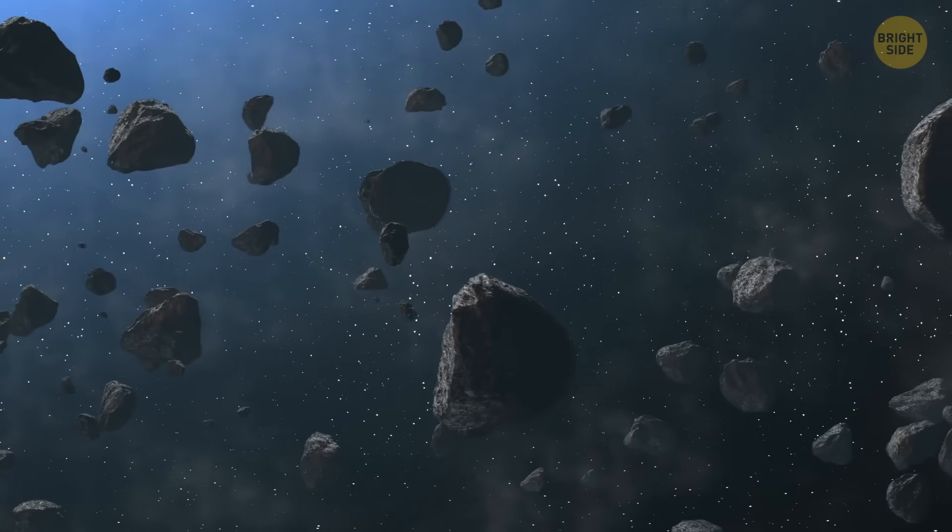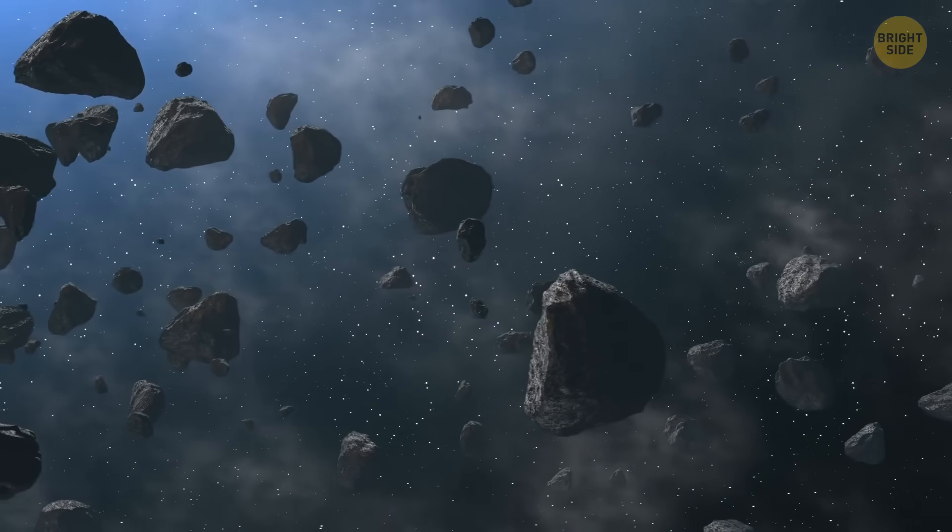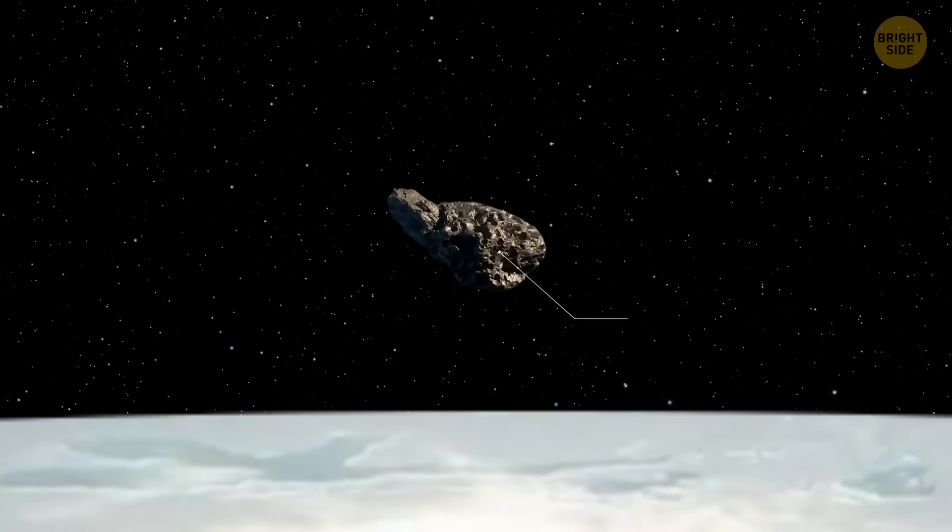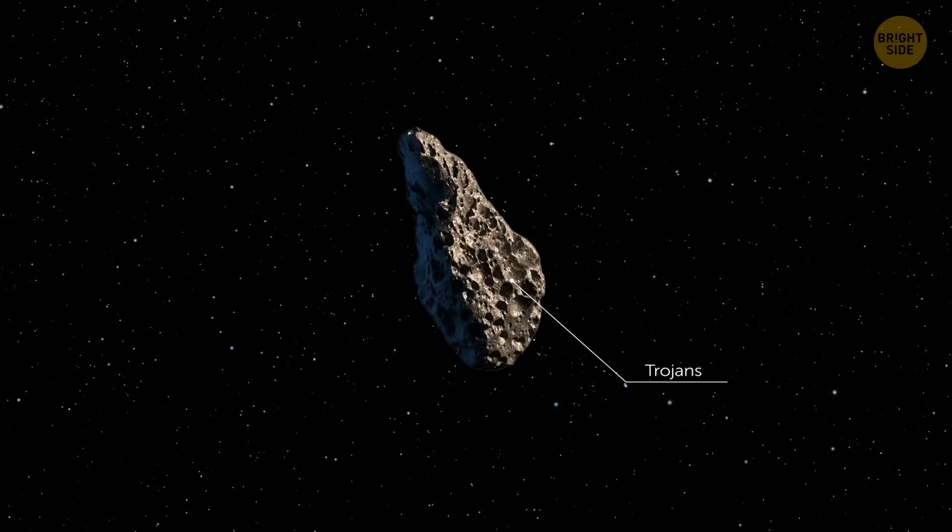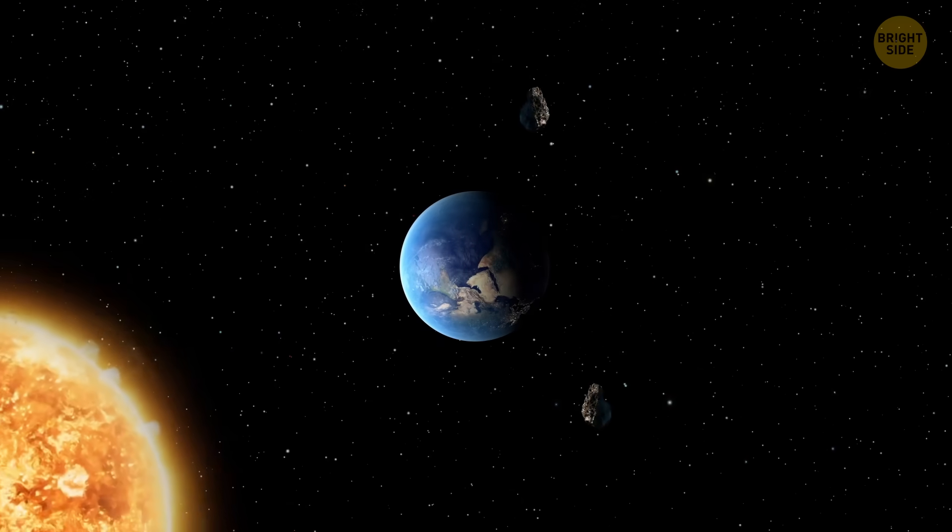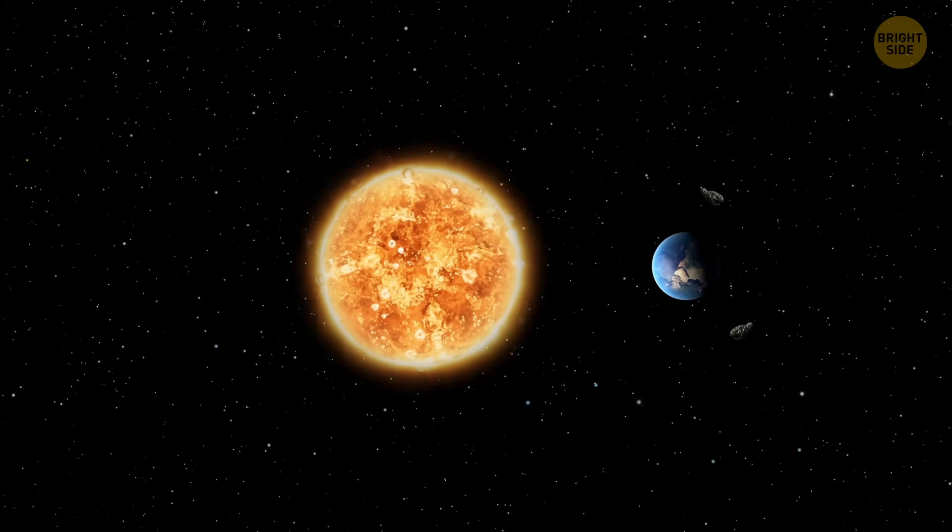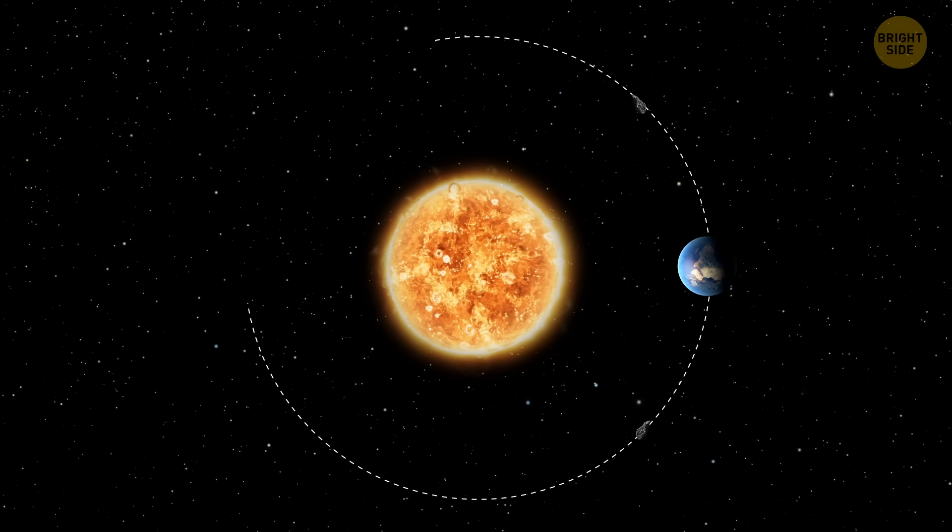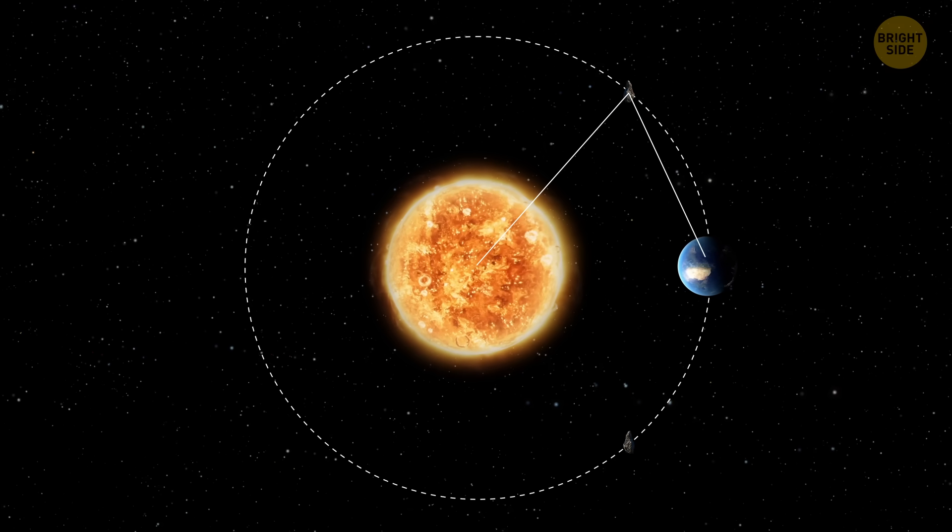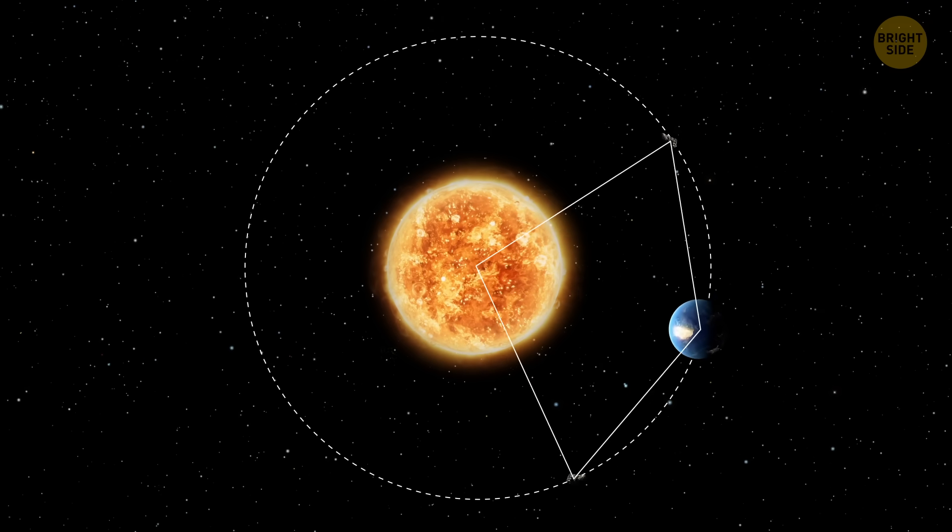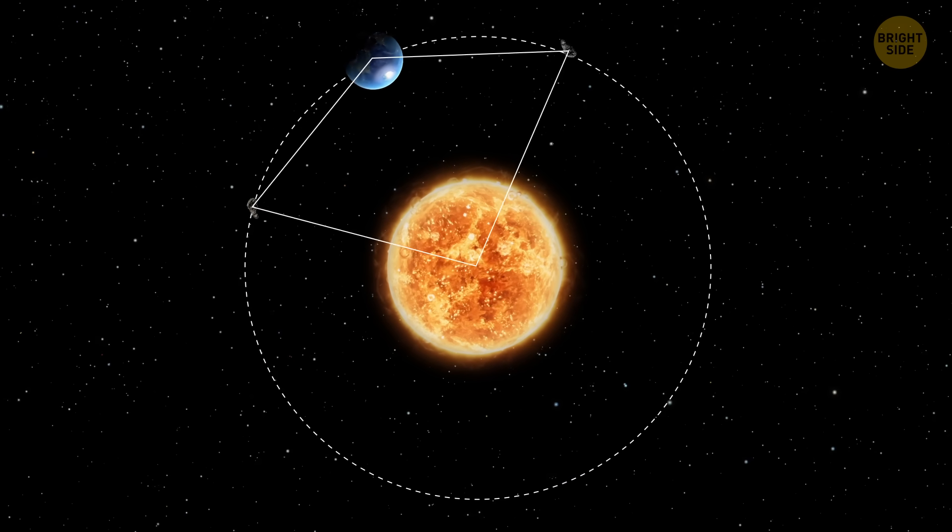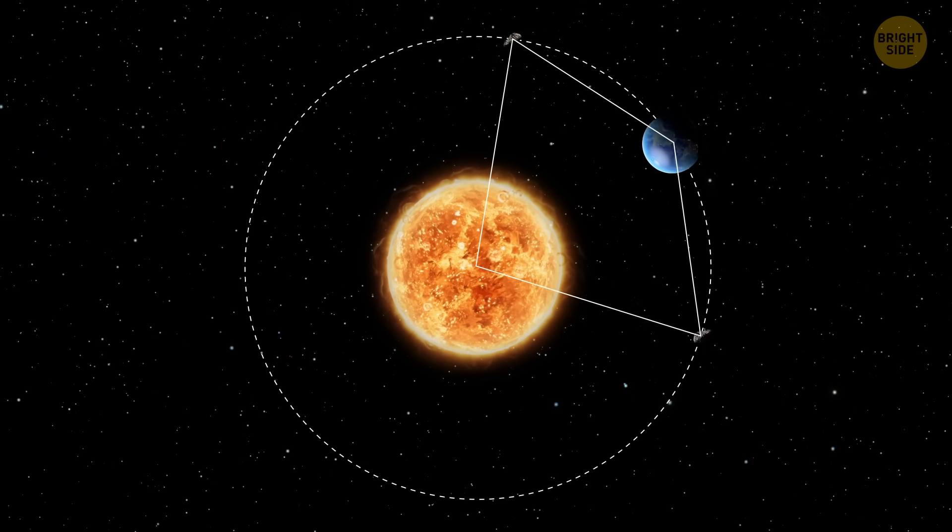And these are just the main co-orbiters. There are actually more. Way ahead of us and way behind us in space, there are a few quirky rocks called Trojans. They're not just following right next to Earth like quasi-moons do. Instead, they've found two special hiding spots. One 60 degrees in front of us, and one 60 degrees behind. Imagine riding your bike and having a friend way ahead of you and another one way behind, both keeping the same speed. That's what Trojans do.